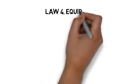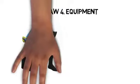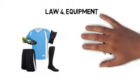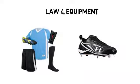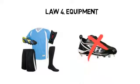Law 4: equipment. Typical soccer equipment consists of shorts, jerseys, shin guards, long socks that go over the shin guards, and soccer cleats. Baseball and football cleats are very different from soccer cleats.